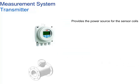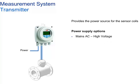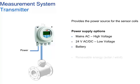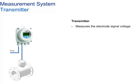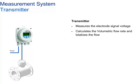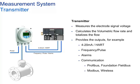The transmitter provides power to the sensor coils. Power supply options include 85 to 253 volts mains AC, 24 volts AC/DC, battery, or renewable energy such as solar or wind. The transmitter measures the electrode signal voltage, calculates volumetric flow rate and totalizer values, and provides outputs as required by the customer.